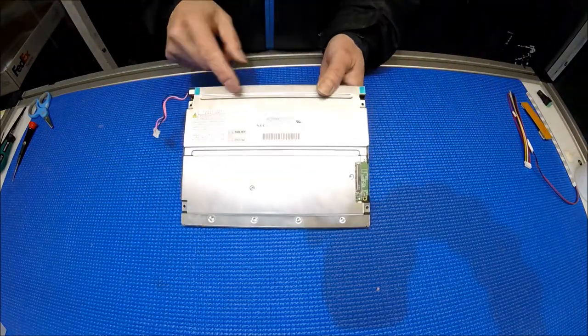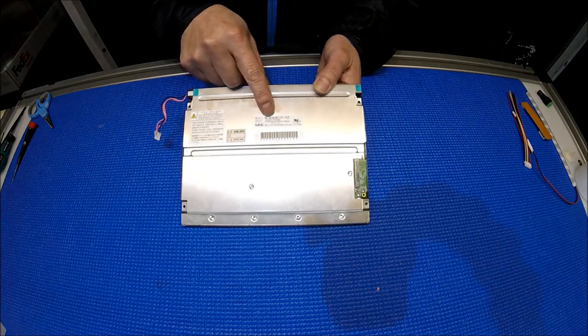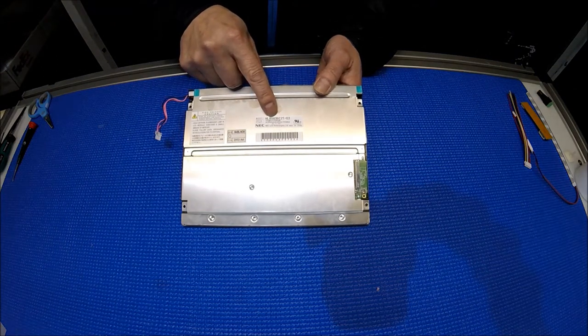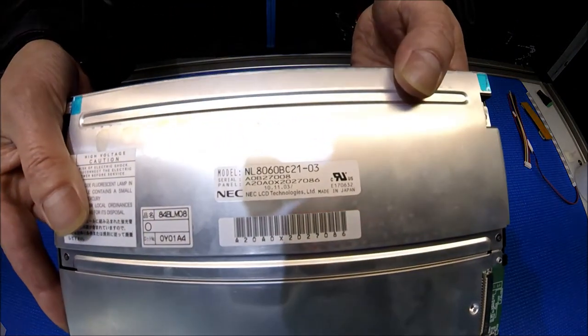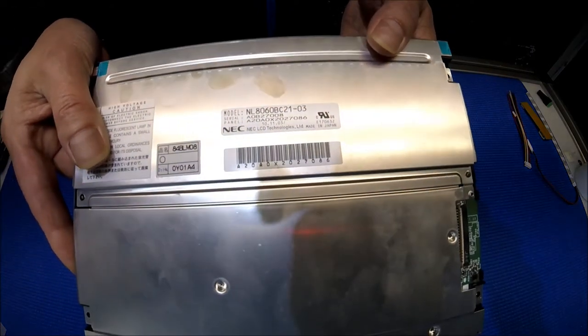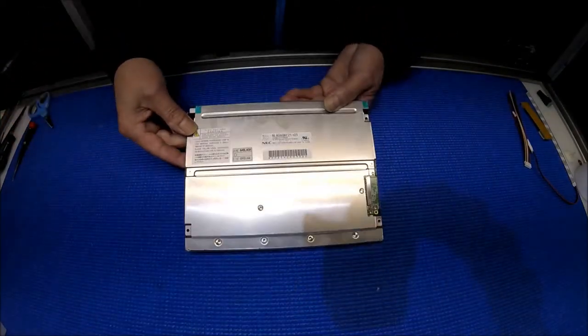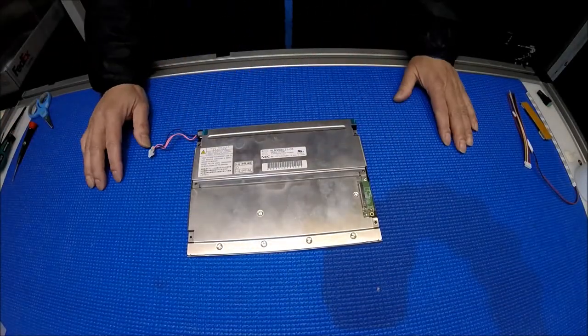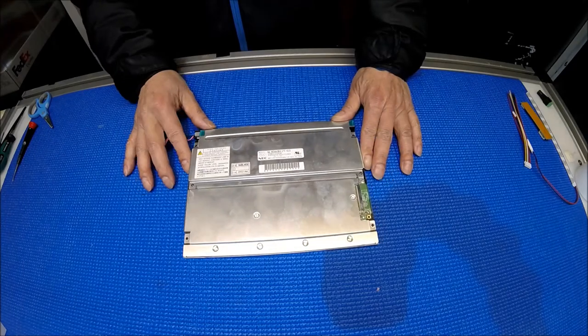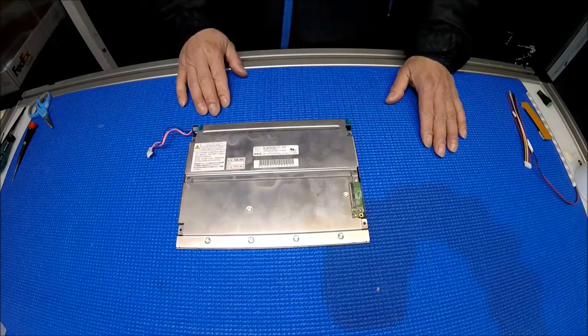This is an NEC screen, the part number is NL8060BC21-03. Again, NL8060BC21-03, a 6.5 inch screen with 800 by 600 resolution. It's a really nice screen.